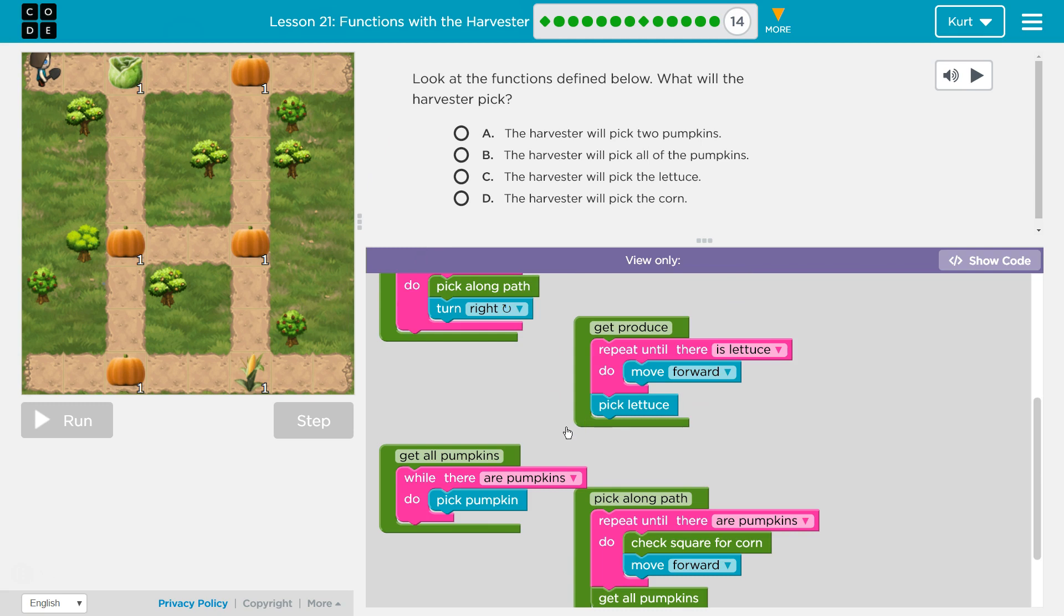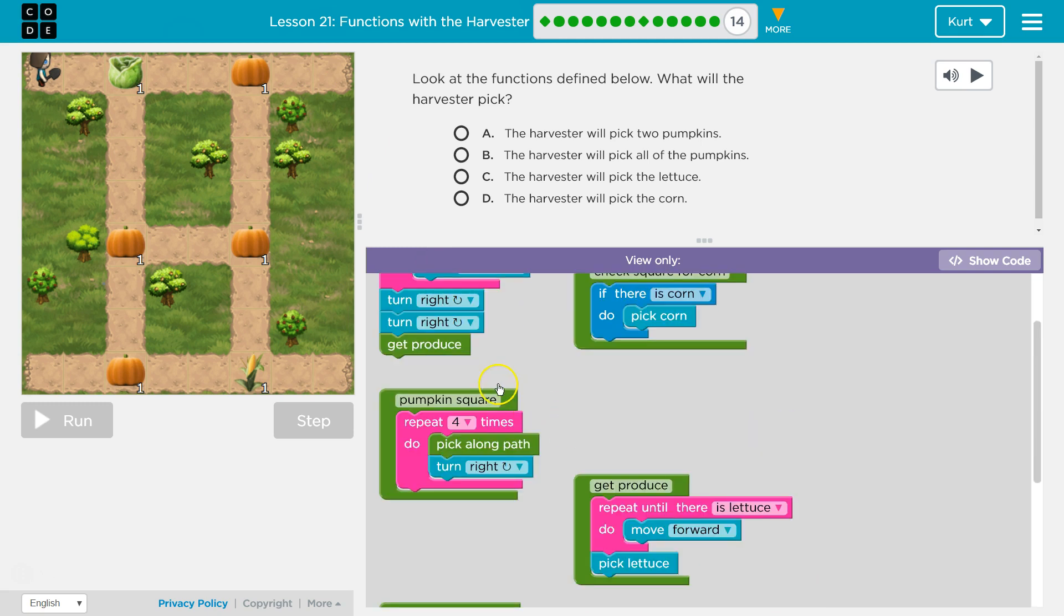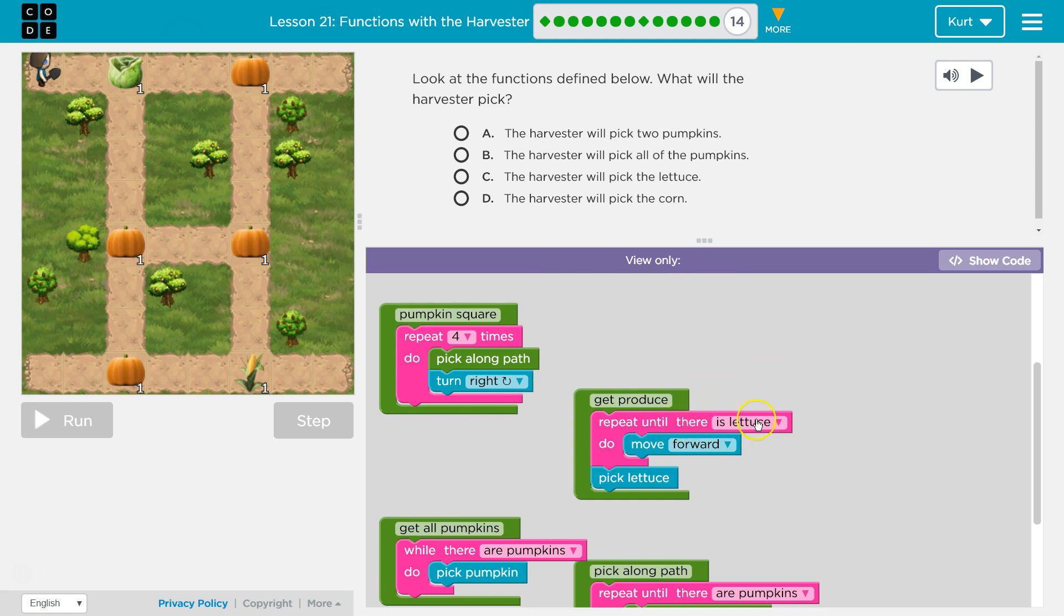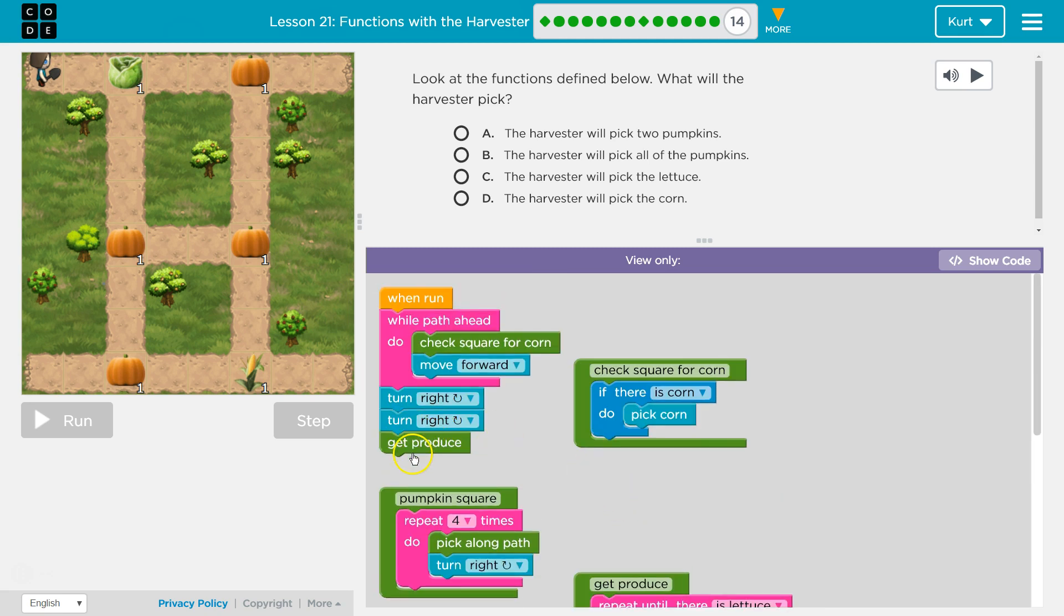What's that do? Get produce. Repeat until there is lettuce, move forward. So then I move all the way forward, keep going, keep going up. There's lettuce. So this will stop repeating. I stop moving forward. And what do I do? I pick lettuce. And then once I pick the lettuce, nothing.